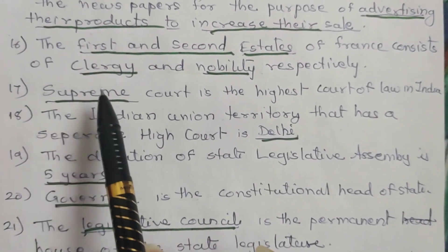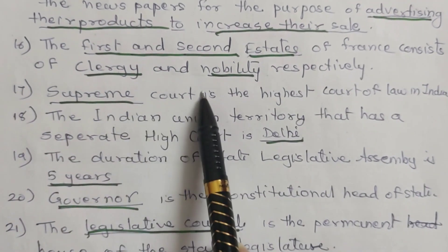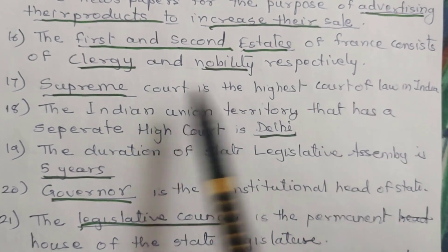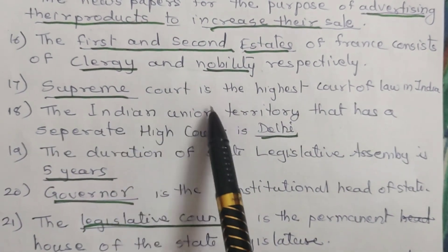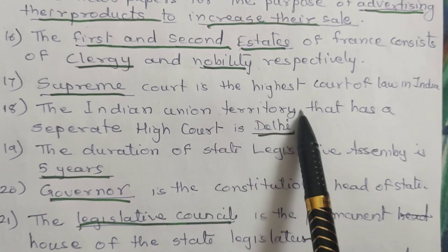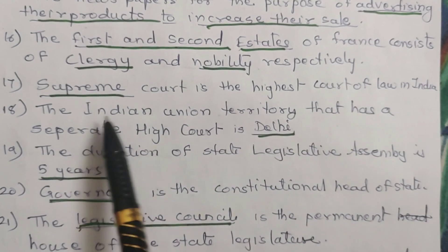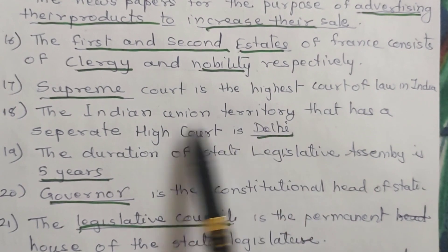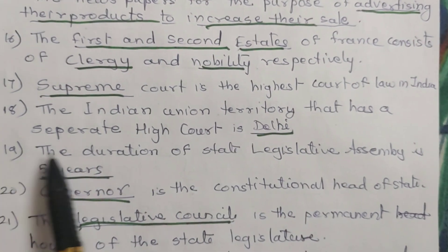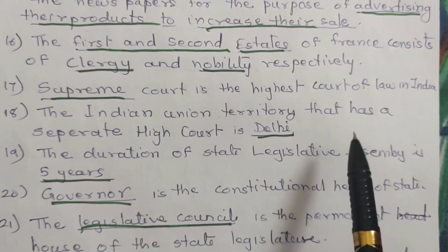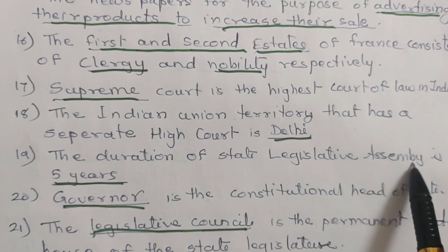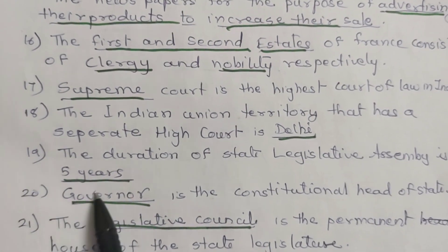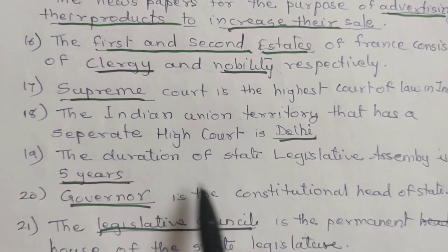17. The Supreme Court is the highest court of law in India. 18. The Indian Union Territory that has a separate High Court is Delhi. 19. The duration of the State Legislative Assembly is five years.